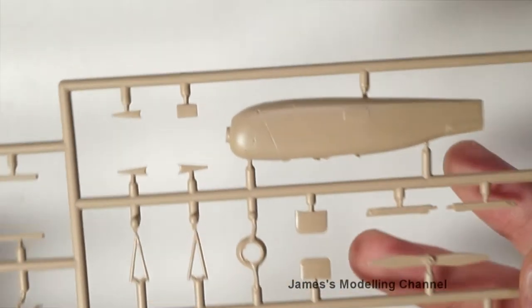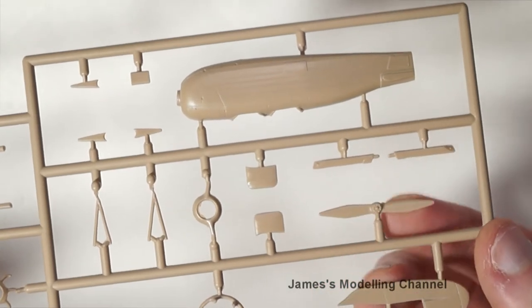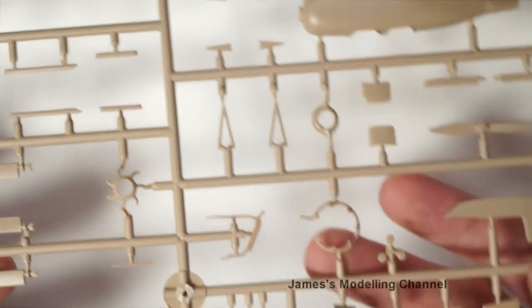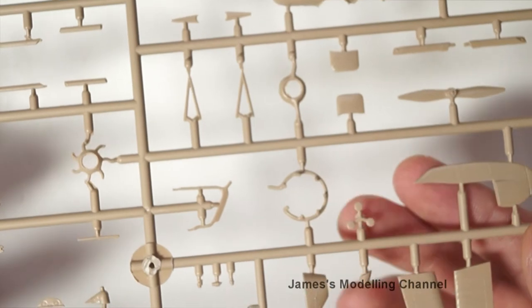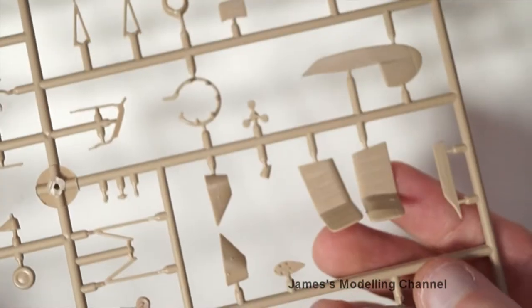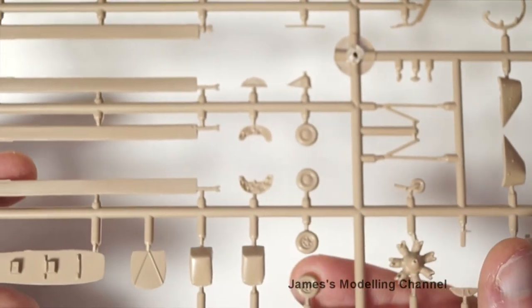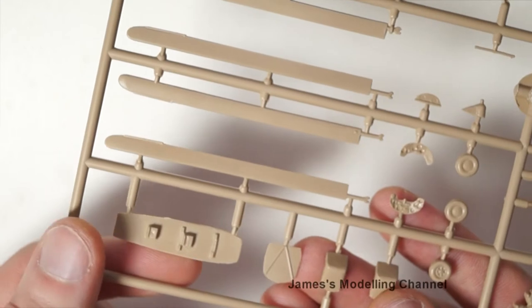A few fuselage halves. The engine and the prop goes on to the front of the engine exhaust manifold. The control surfaces, two wheel options, some seats, and the cockpit component parts.